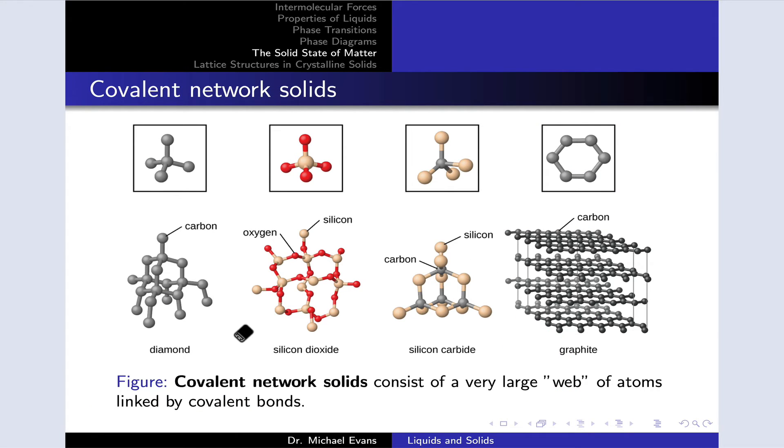Solids may also contain covalent bonds, and those may appear in discrete small molecules or in very large networks of atoms linked by covalent bonds. Network solids consist of this very large web of atoms linked by covalent bonds, and this slide shows a number of examples.